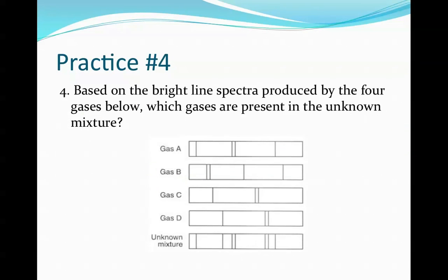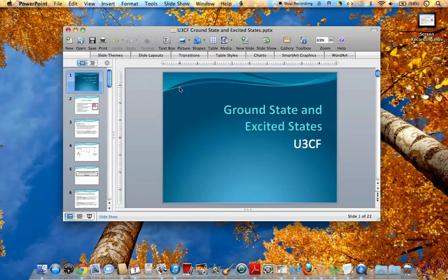And then finally, based on the bright line spectrum produced by the four gases below, which gases are present in the unknown mixture? Okay, take a second, check this out. You should find that gas A and D are both contained in the mixture because every single one of their wavelengths is found in the mixture. Okay, that's it. So we're going to go back over again tomorrow, ground state versus excited state, discuss all the types of questions and content that's related to that, and then also practice explaining how these bright line spectra are produced.